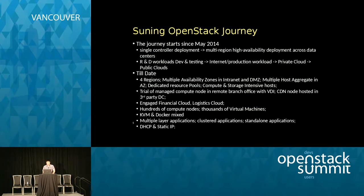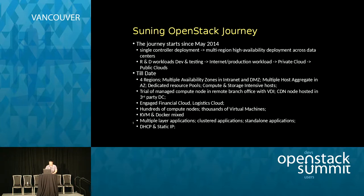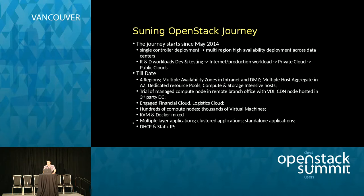Before May 2014, Suning cloud was not based on OpenStack — it was based on another stack. Suning has now deployed KVM and Docker mixed cloud with four regions and thousands of virtual machines, with approximately 100 new virtual machines every day, some imported from the old cloud. Use cases include virtual desktop infrastructure, managing CDN nodes hosted in third-party data centers, multi-tier applications, and clustered and standalone applications. Suning uses host aggregates heavily with a customized scheduler.